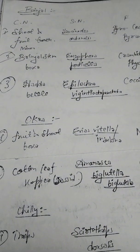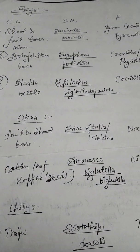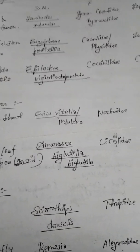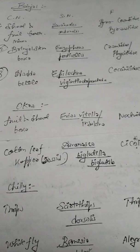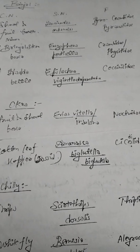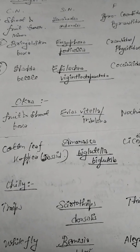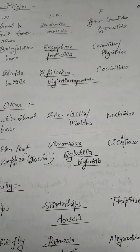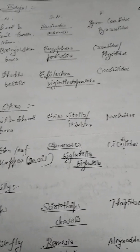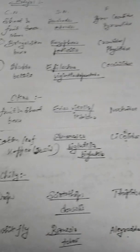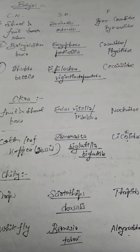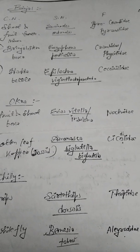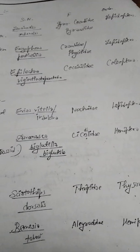So student, as you see: shoot and fruit borer of brinjal is Leucinodes orbonalis, family is Crambidae and order is Lepidoptera. Borers are mostly Lepidoptera. Brinjal stem borer is Euzophera perticella, family is Crambidae or Phycitidae and order is Lepidoptera. Hadda beetle scientific name is Epilachna vigintioctopunctata, family is Coccinellidae and order is Coleoptera.